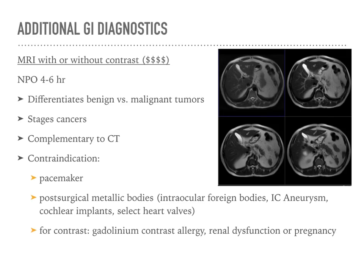MRI is much more expensive. It has less radiation and helps get additional information when differentiating between tumors, determining benign versus malignant, and may be very helpful in staging certain types of cancer. It can complement information received from CT. One absolute contraindication for MRI: the MRI is a big magnet. Anything metallic should be kept away — pacemakers are a contraindication, though both Medtronic and Boston Scientific are developing MRI-friendly pacemakers. Anyone with devices containing metal should be kept out of the MRI exam room.